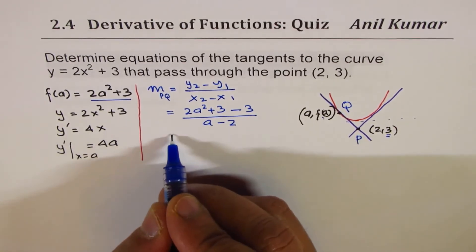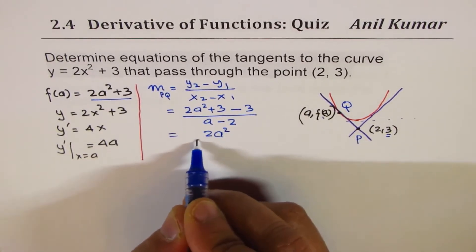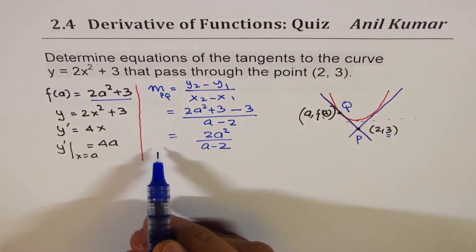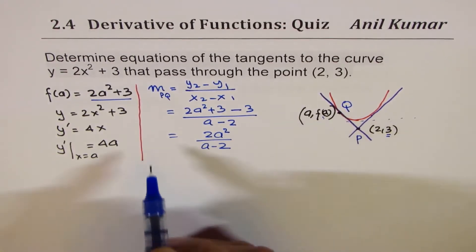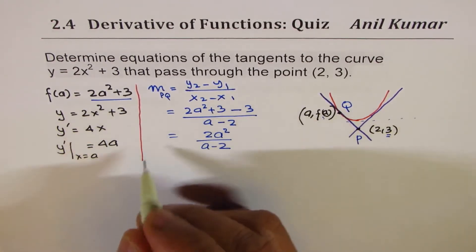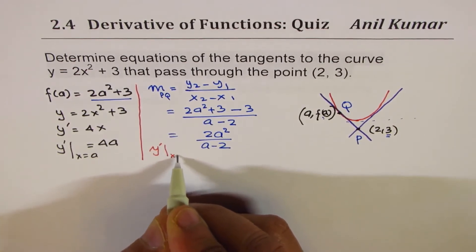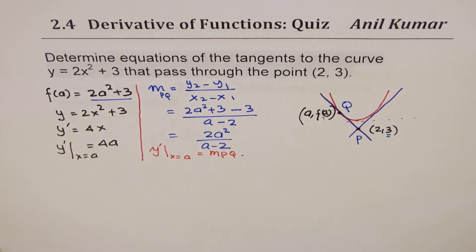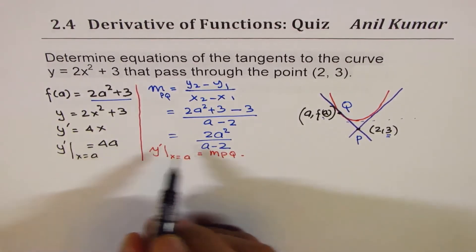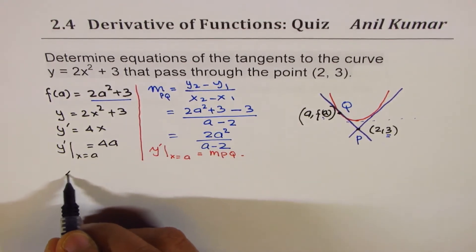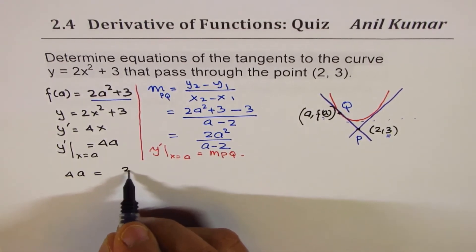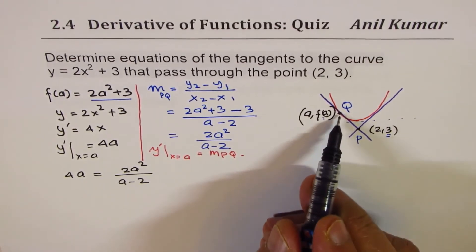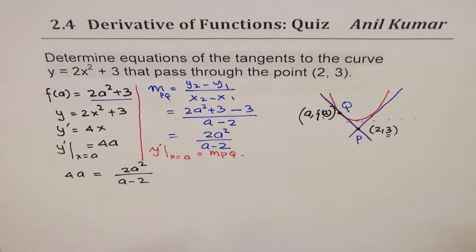So we can equate it. This could be simplified as 2a squared over (a minus 2). Now, both these slopes are at point a. So that means y dash at x equals a should equal the slope between the points. So that gives us an equation to solve. Since it is at the same point, two slopes, both should be same.